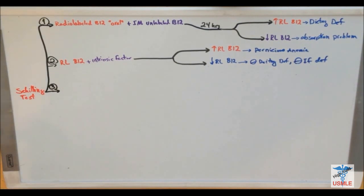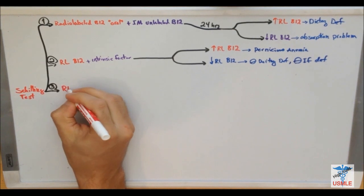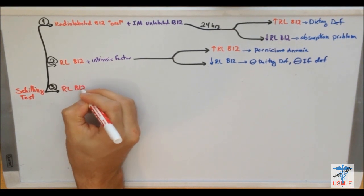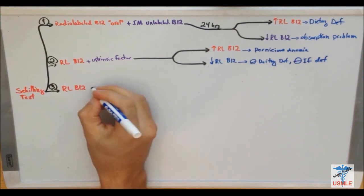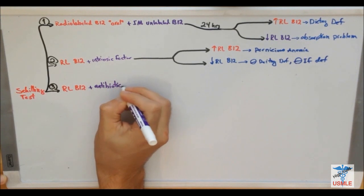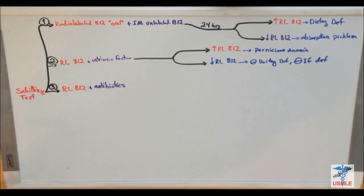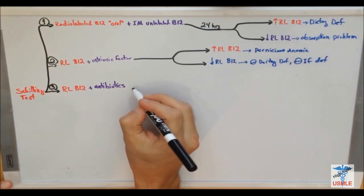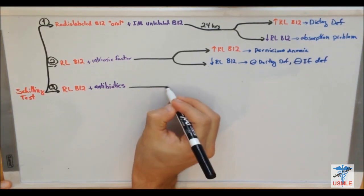And now, this time, you give, again, radio-labeled B12. But this time, you will give antibiotics. So, why are you giving antibiotics? Well, maybe the reason of malabsorption of B12 is due to overgrowth of bacteria in your GI system. So, this antibiotic will get rid of those bacteria.